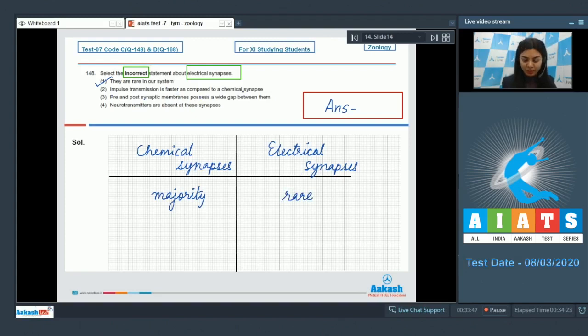Option 3: Pre and post synaptic membranes possess a wide gap between them. In an electrical synapse, the pre and post synaptic neurons are connected together by gap junctions and are in very close proximity. So the presence of a wide gap between them would be incorrect. Thus this is an incorrect statement.